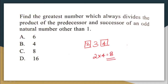So the greatest number which always divides the product of the predecessor and the successor of an odd natural number other than one might be eight. Let us take one more example — let us take five. The number that comes after five is six and the number that comes before five is four.